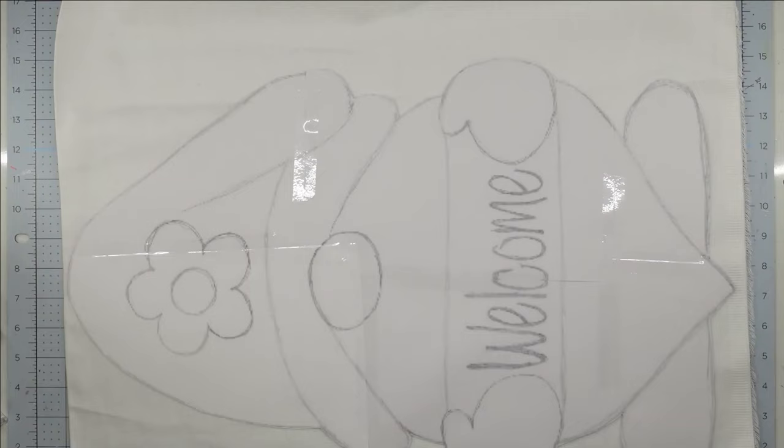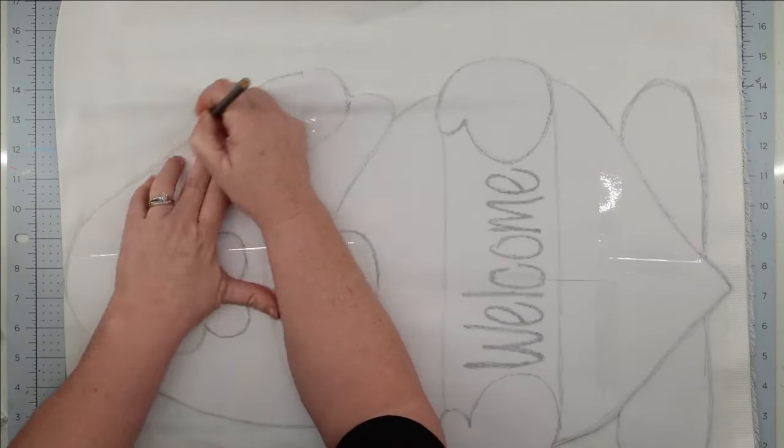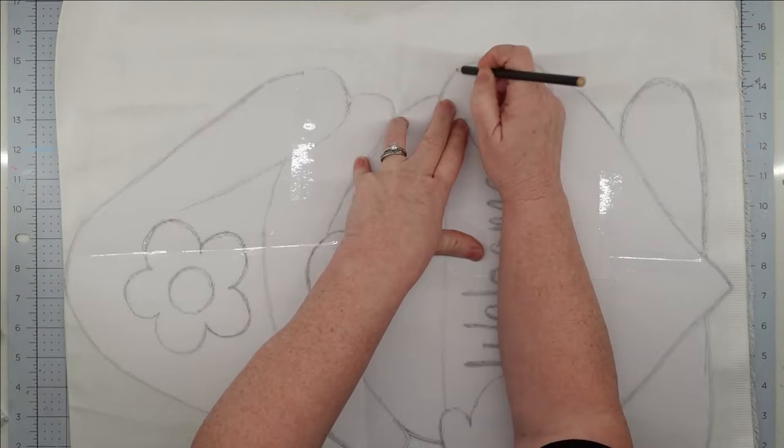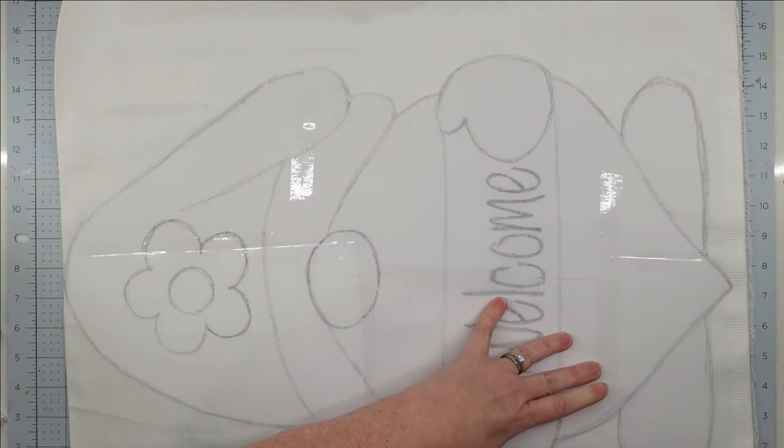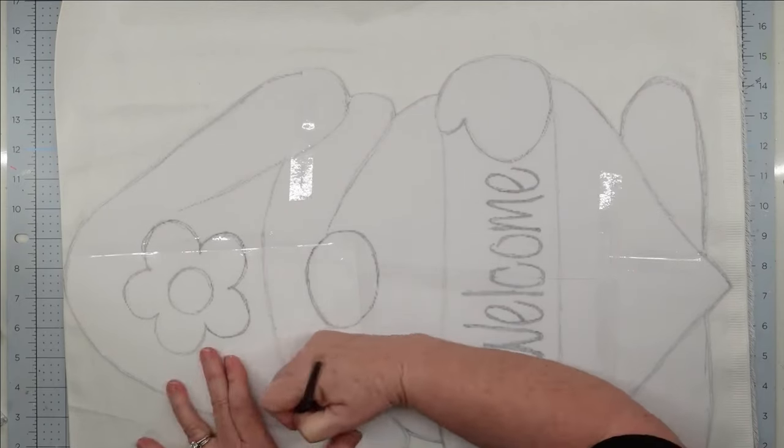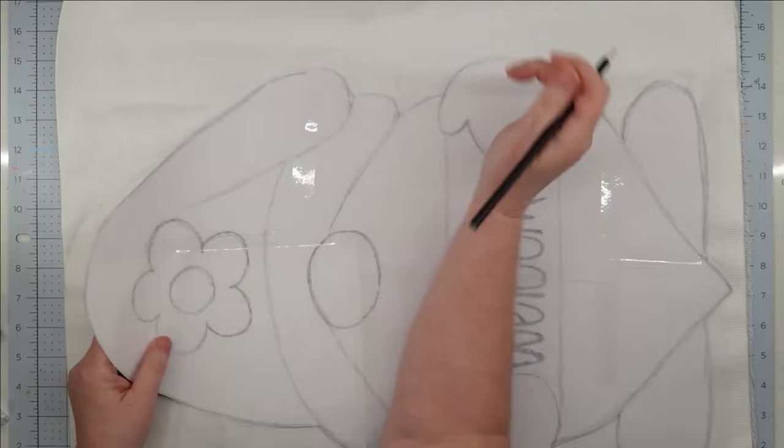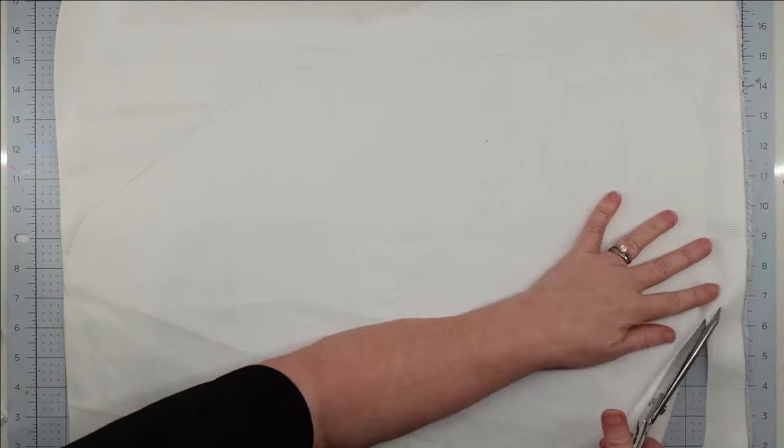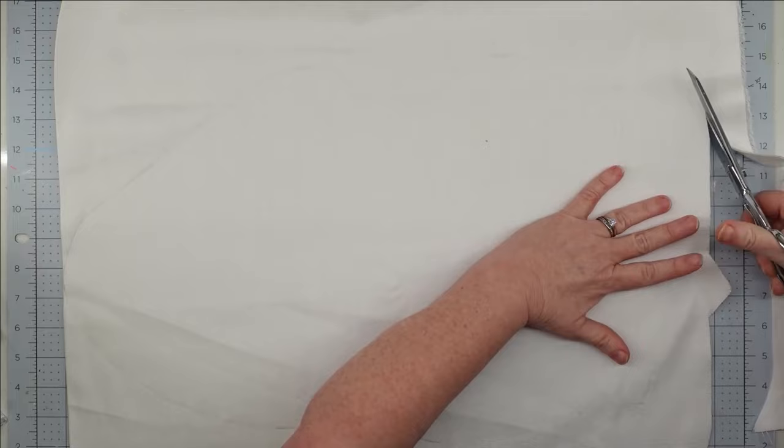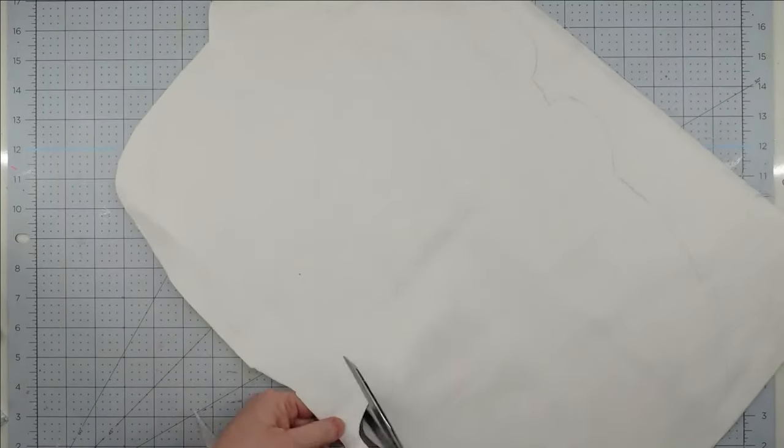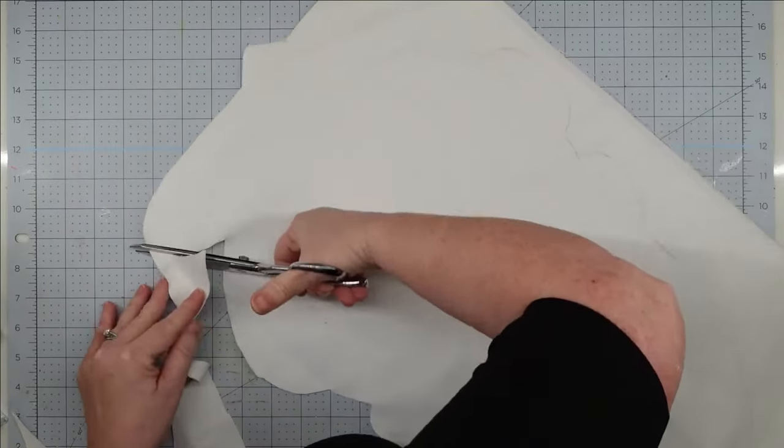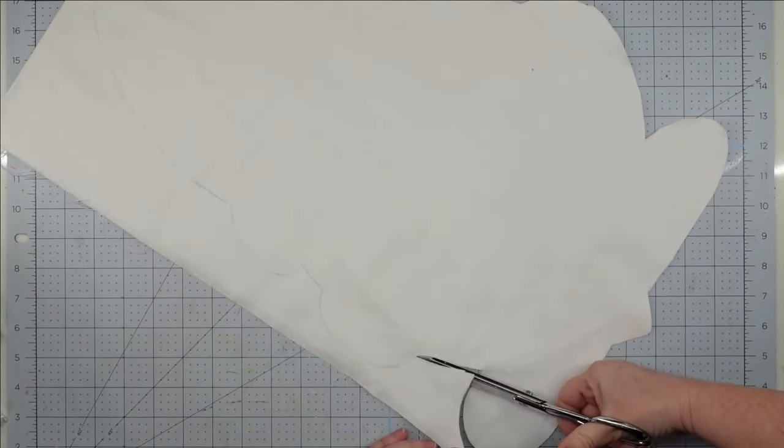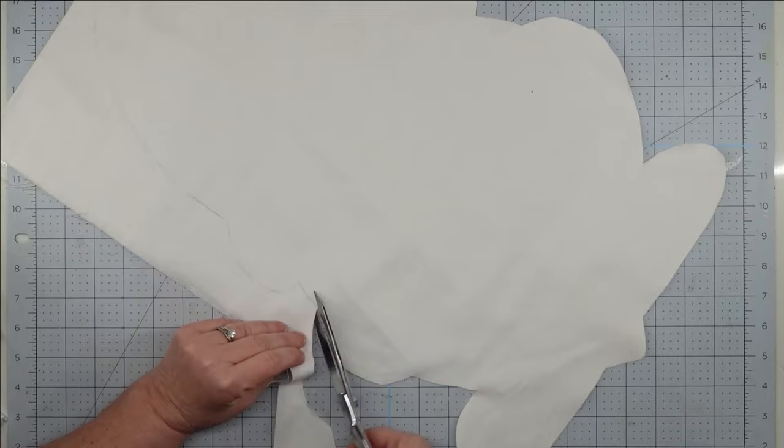Now we're going to take our pattern and lay our fabric out, making sure that it's doubled. You want to cut two pieces of this. My preferred method is to hold my pattern down and just trace around it with either a pen or a pencil. Then you can cut out both pieces at the same time. If you aren't comfortable with that, you can pin your pattern to both layers and cut around it.